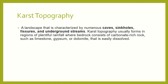Karst topography is characterized by various types of caves, sinkholes, underground streams, and fissures. It is usually formed in regions of plentiful rainfall where bedrock consists of carbonate rocks such as limestone, gypsum, and dolomite, which can be easily dissolved.